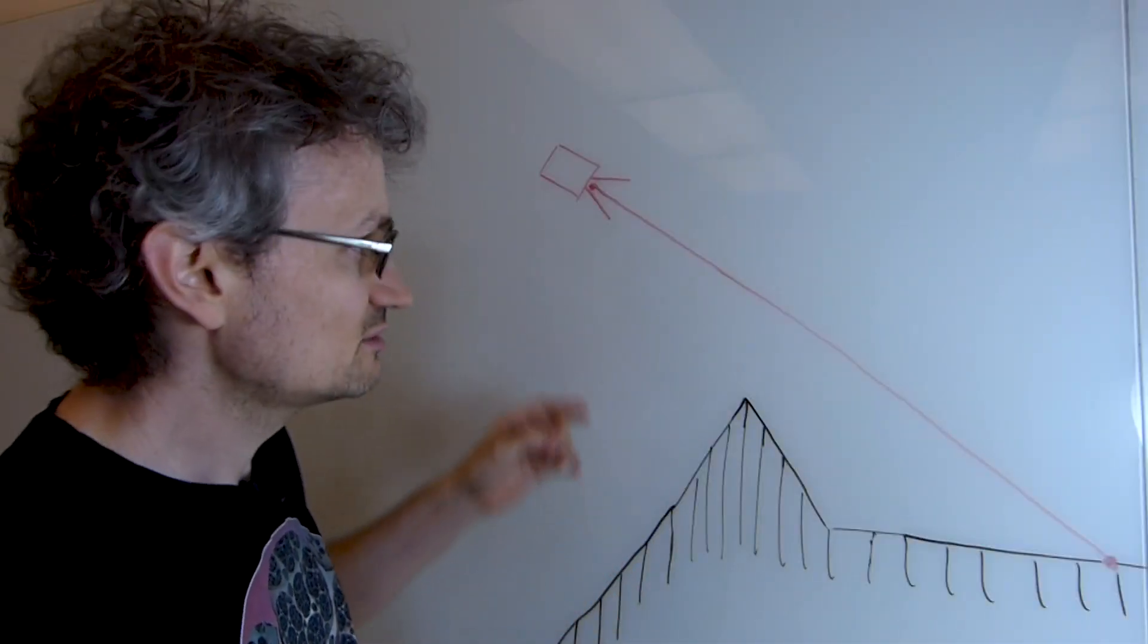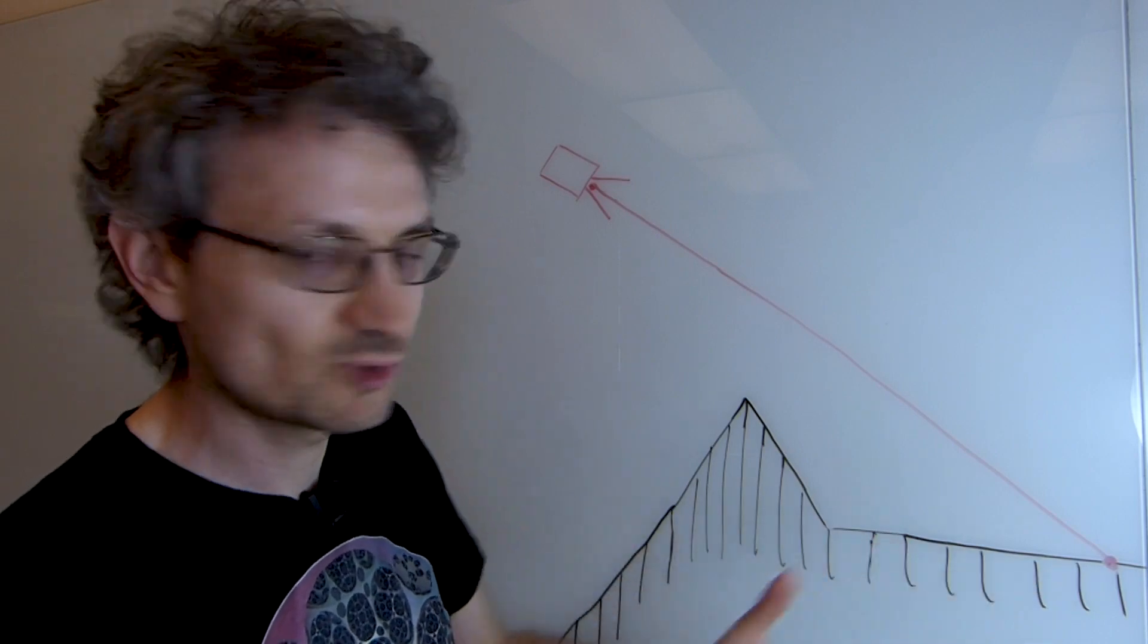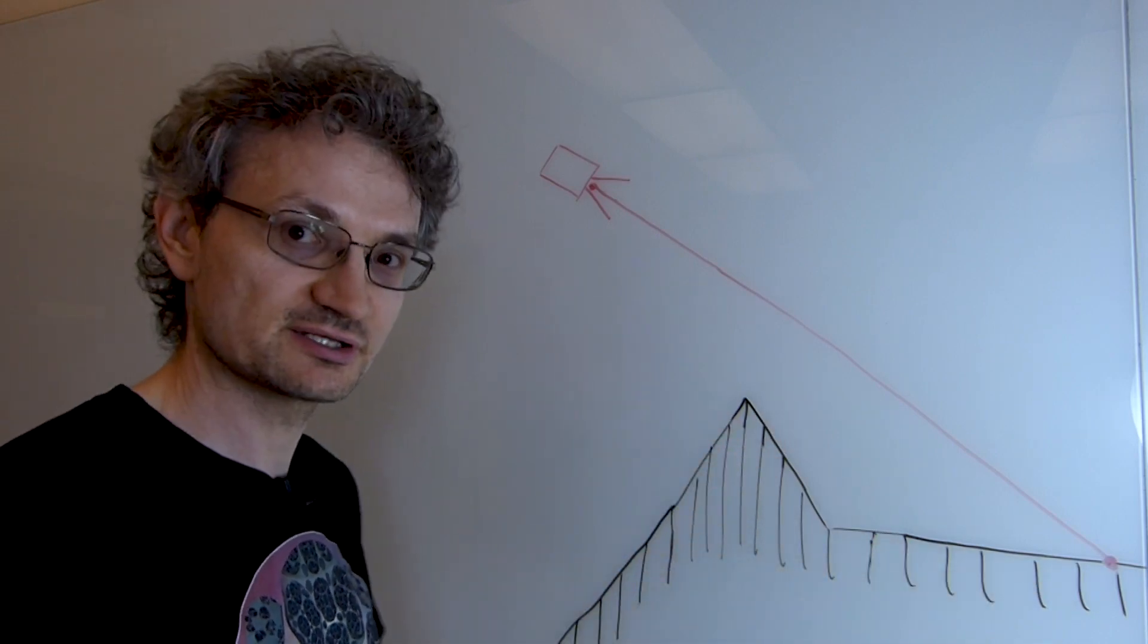For each pixel on the screen, we cast a ray from a virtual camera out into the world to see what object it hits and therefore what color the pixel should be.